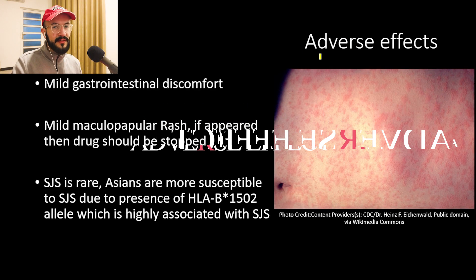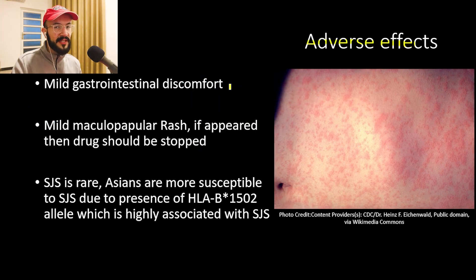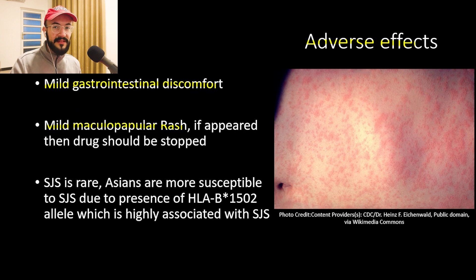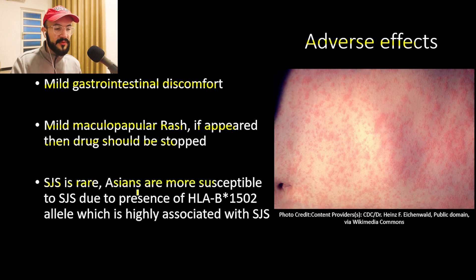Now let's talk about the adverse effects of carbamazepine. It may lead to mild gastrointestinal discomfort. It may also lead to a mild maculopapular rash, which is allergic in nature — if this rash appears, the drug should be stopped, because the next progression is Stevens-Johnson syndrome. This is rare, but Asian patients are more susceptible to Stevens-Johnson syndrome due to the prevalence of the HLA-B*1502 allele.